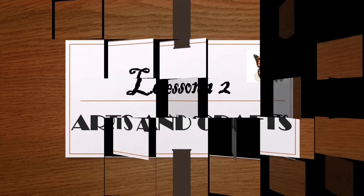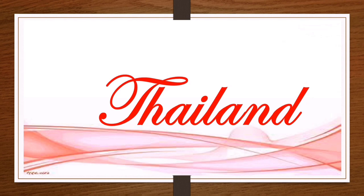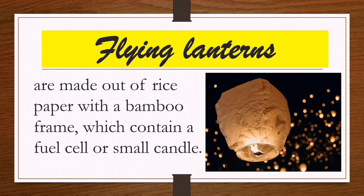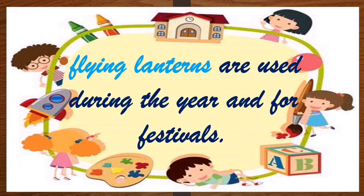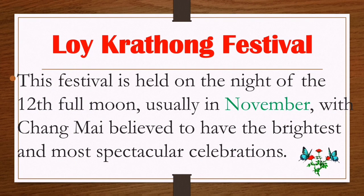Now let us discuss Lesson 2: Arts and Crafts. Starting with Thailand, their arts and crafts include flying lanterns. Flying lanterns are made out of rice paper with a bamboo frame containing a fuel cell or small candle. They are used during festivals; one famous event is the Loi Krathong festival, held on the night of the 12th full moon, usually in November, with Chiang Mai known for its spectacular celebrations.